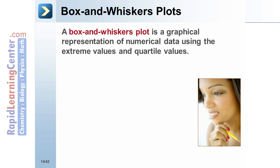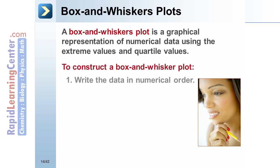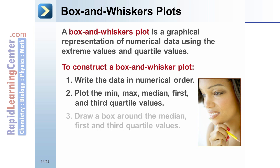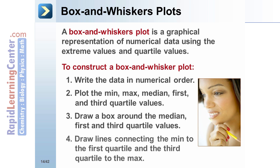Box and whiskers plots: a box and whiskers plot is a graphical representation of numerical data using the extreme values and quartile values. To construct a box and whiskers plot: one, write the data in numerical order; two, plot the min, max, median, first, and third quartile values; three, draw a box around the median, first, and third quartile values; and four, draw lines connecting the min to the first quartile and the third quartile to the max.